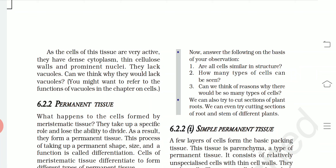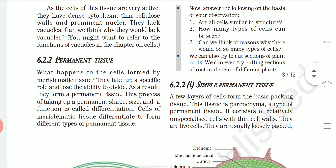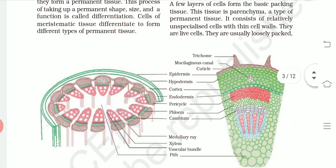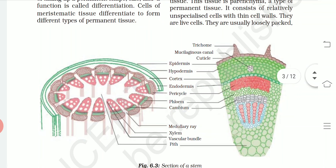Now, what happens to cells formed by the meristematic tissue? They take up a specified role and lose the ability to divide. As a result, they form permanent tissue. This process of taking up a permanent shape, size, and function is called differentiation. Cells of meristematic tissue differentiate to form different types of permanent tissues.